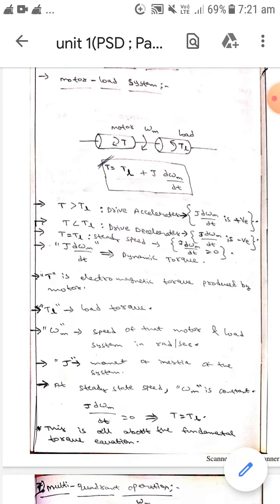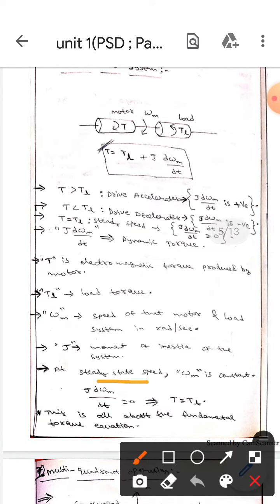At steady state speed, ωm is constant, which means J × dωm/dt equals zero. As ωm is constant, the derivative of a constant is zero.